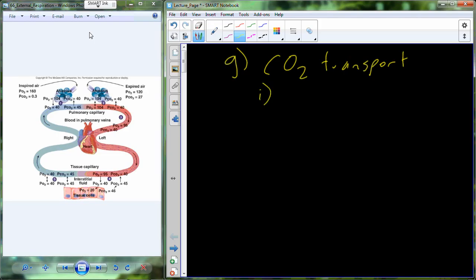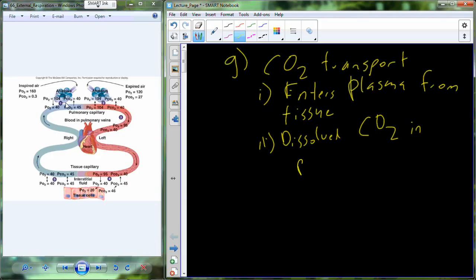Starting from the tissue and working through the venous side of the circulation, from the tissue CO2 is going to enter the plasma. We'll find some CO2 dissolved in the plasma. But similar to oxygen, it's only a small percentage that's dissolved in the plasma.